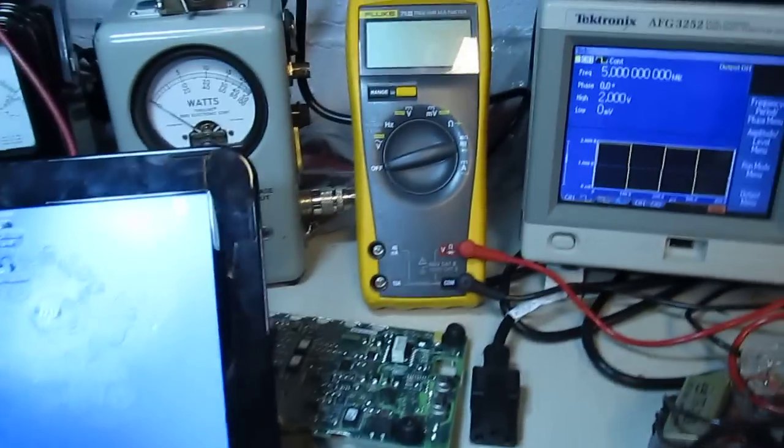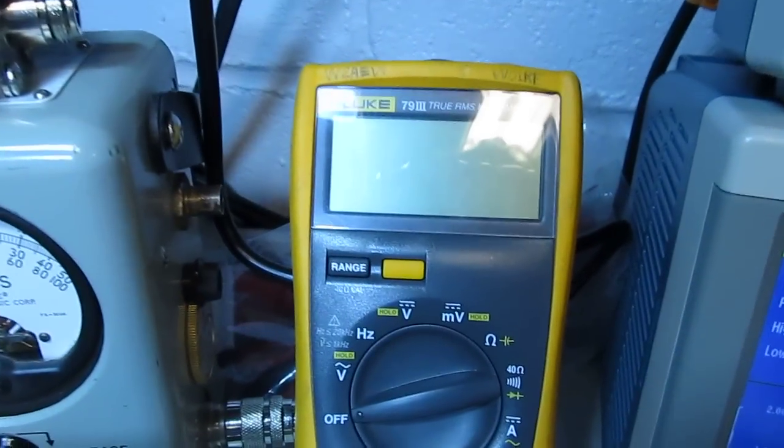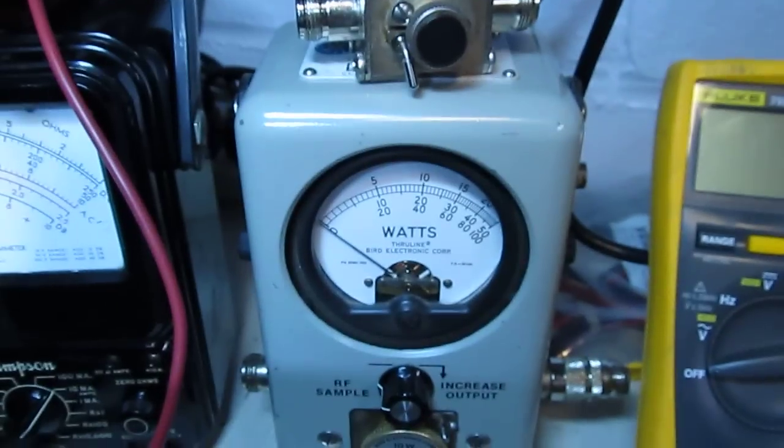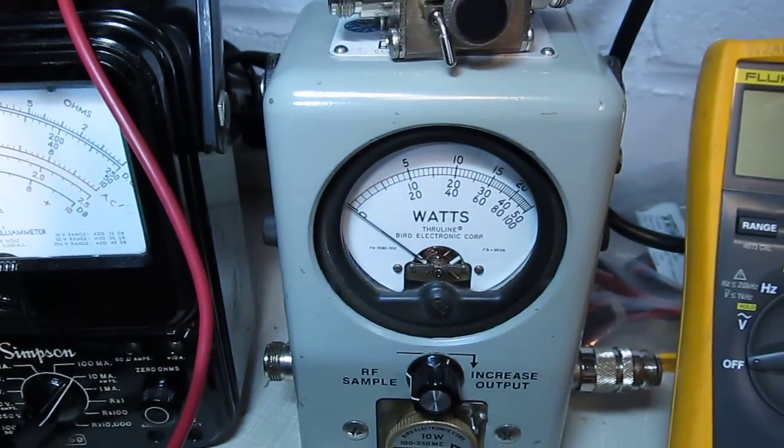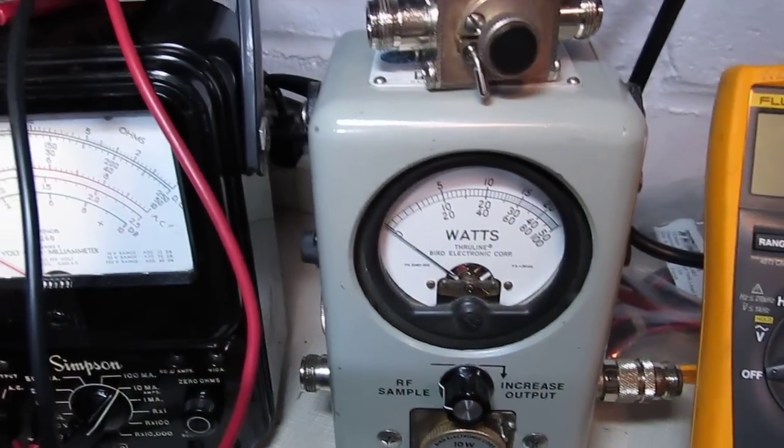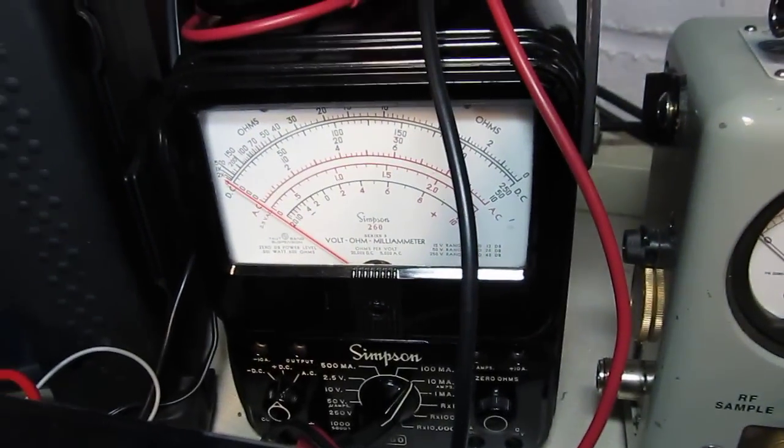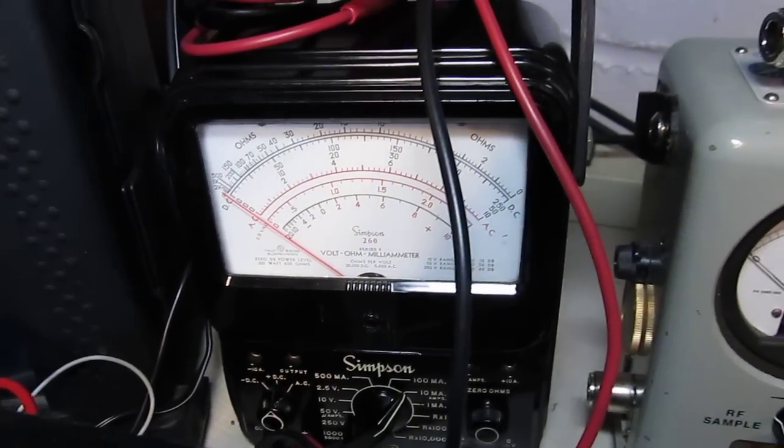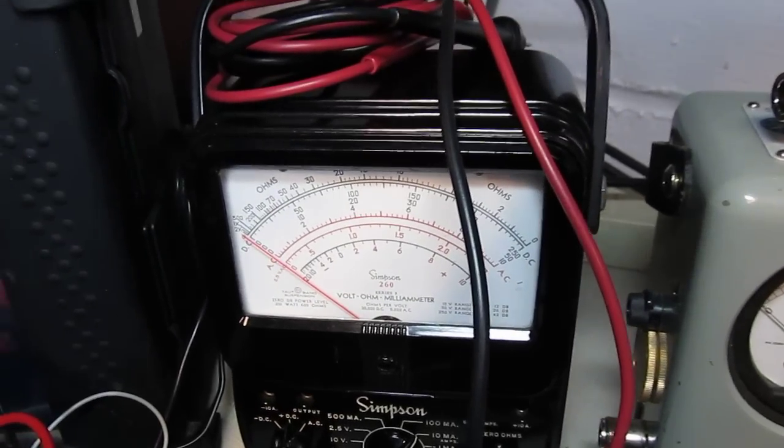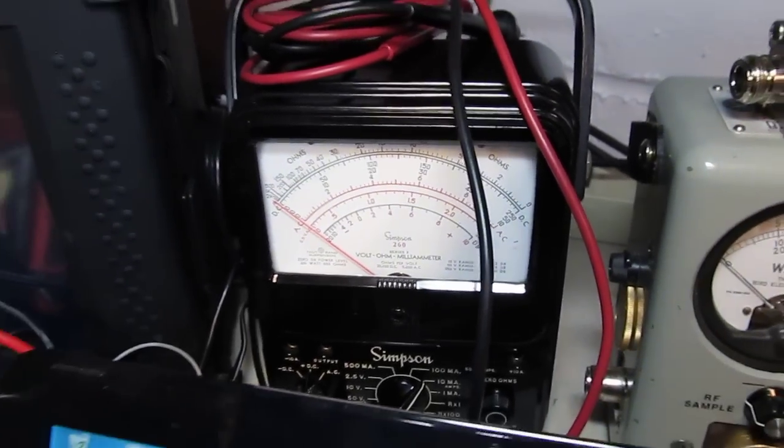Just a bunch of other stuff here on the bench. This is a Fluke 79 DMM, use that one all the time. Another, excuse me, a Bird RF power meter doing all my RF work here and a Simpson 260 VOM, kind of a staple in the industry for analog meters. I really like using the analog meters when adjusting circuits and things like that.